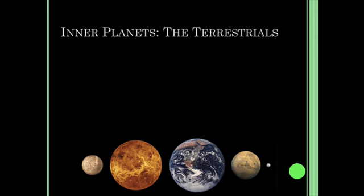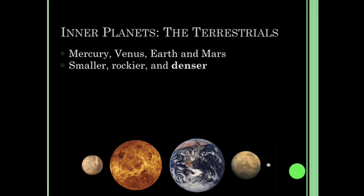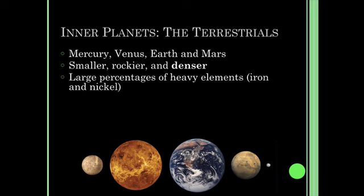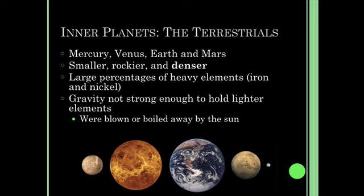We're going to get our inner planets first, and they're a little different than our outer planets. They're our terrestrial planets — Mercury, Venus, Earth, and Mars. They are smaller, rockier, and denser than our outer planets, and they have higher percentages of iron and nickel. That has to do with the gravity of the proto-sun, which pulled those heavier elements — iron and nickel — towards it, so they became part of the inner planets. But gravity for these inner planets is not strong enough to hold on to lighter elements like gases. Once the proto-sun starts giving off light, there's a solar wind, and it either boils away or blows away those lighter elements and gases towards the outer planets. That's why some of our inner planets don't have much of an atmosphere.